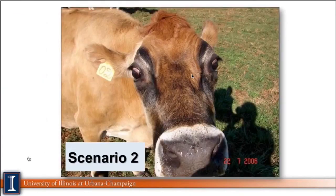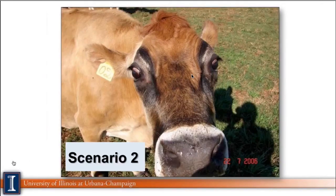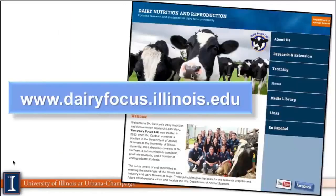Scenario two could be something like adding corn gluten feed and canola meal to make your diet cheaper while expecting more milk protein — that's a scenario you can play with. Because of time, I'll save that for another day. To access the spreadsheet, click on Dairy Focus Illinois, go to Research and Extension, and you'll find the tool there.